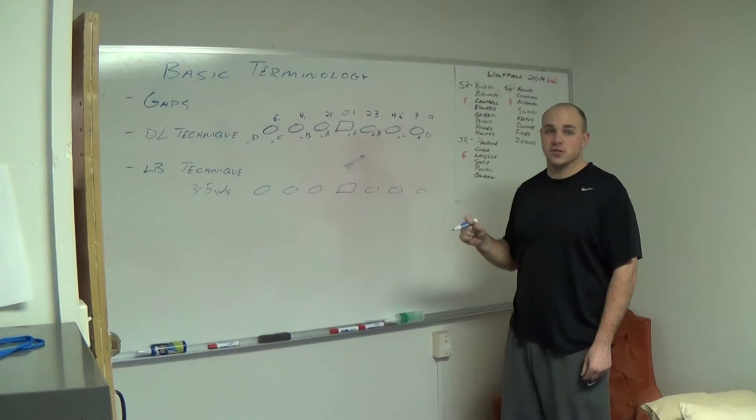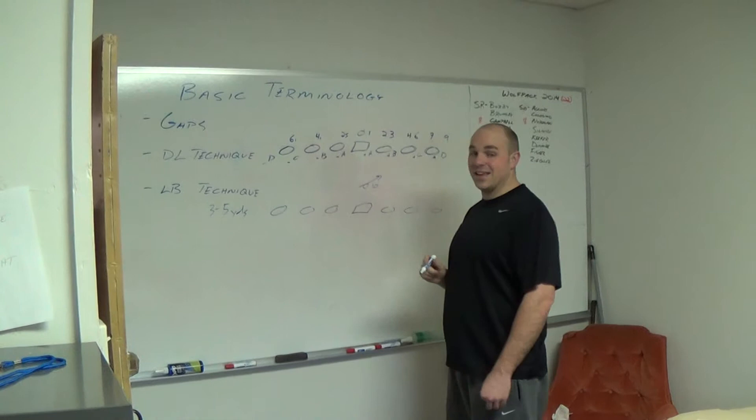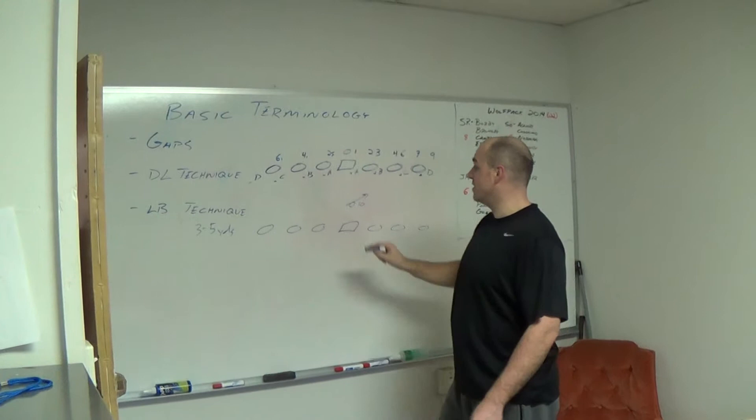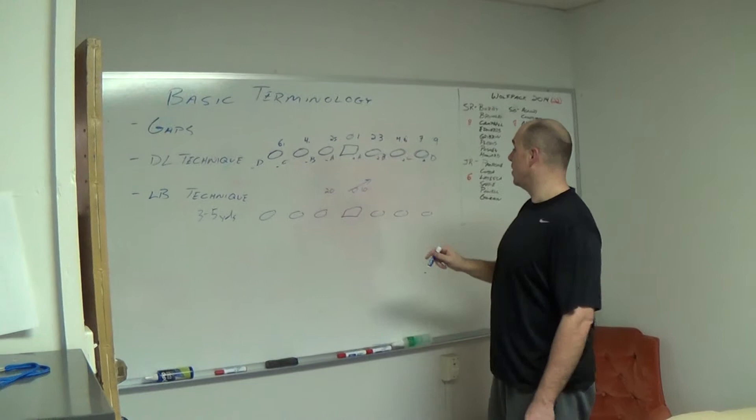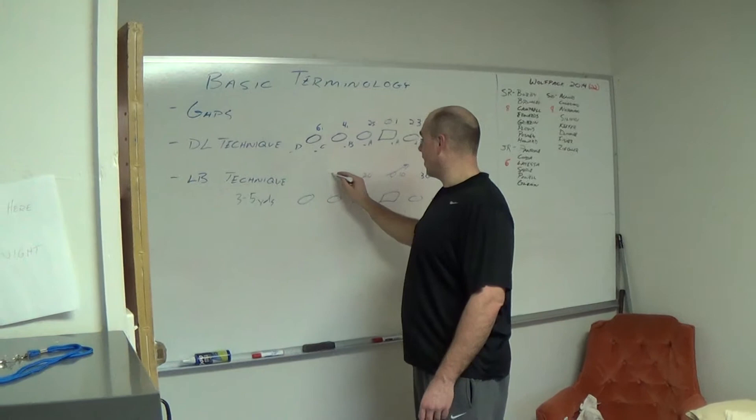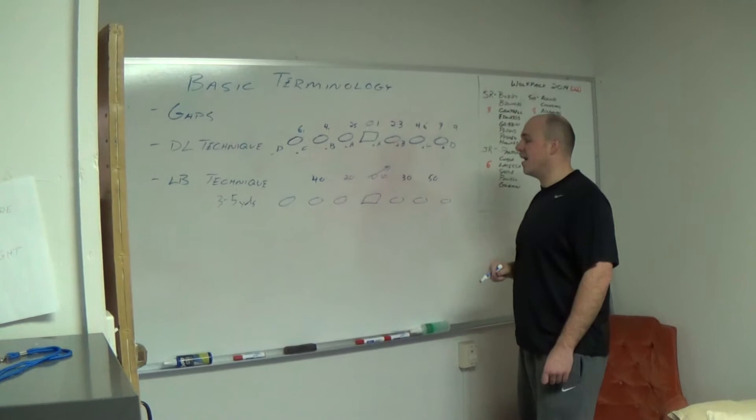If he's shaded to one side or the other, that's a ten technique. So take the one, add a zero, a ten technique. Inside shade of the guard is a twenty technique. Head up to inside shade is a twenty. Outside shade is a thirty. Head up to inside of the tackle is a forty.